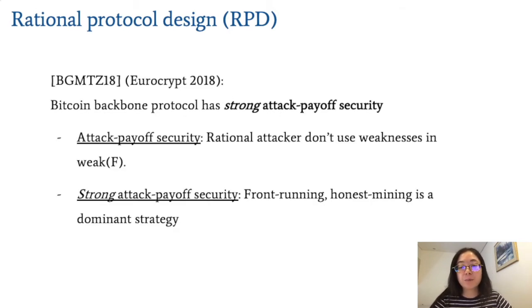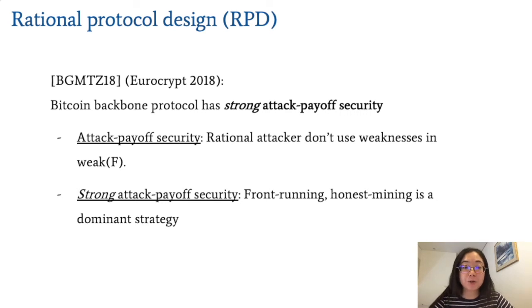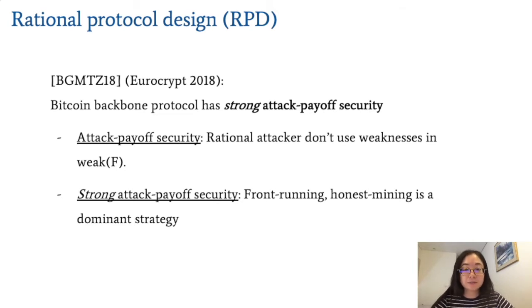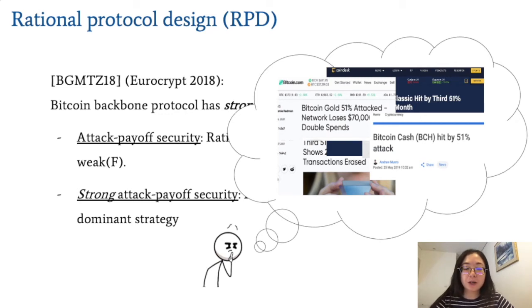In EuroCrypt 2018, BGMTZ showed the following for the Bitcoin backbone protocol — although they weren't explicitly analyzing 51% attacks, they showed an even stronger property called strong attack payoff security. That is, attackers are incentivized to just follow the protocol honestly. But wait — something doesn't seem right. Didn't we just say that a bunch of cryptocurrencies got attacked? So what's happening?